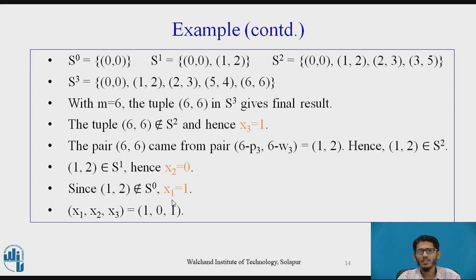Thus, we summarize the values of x1, x2, x3 equal to 1, 0, 1 meaning the first and the third object are selected to be put into the knapsack whereas the second object is not taken.